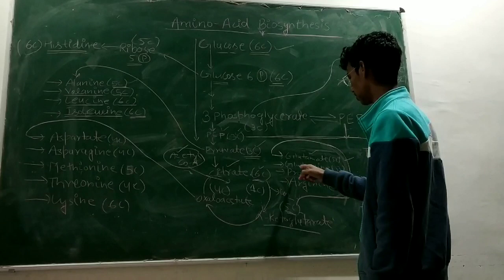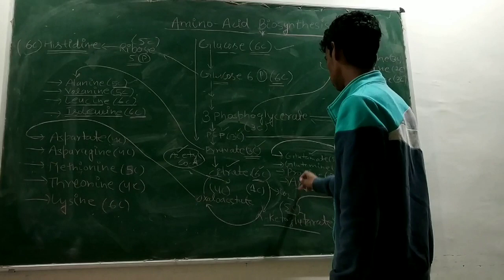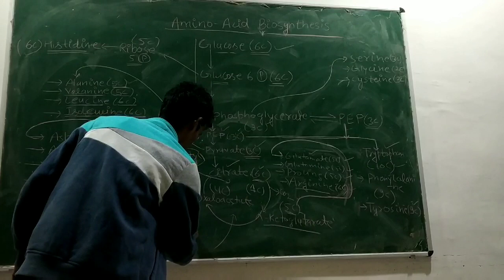Our glutamate is 5 carbons, glutamine is 5 carbons, and proline is 5 carbons. These come from alpha-ketoglutarate.